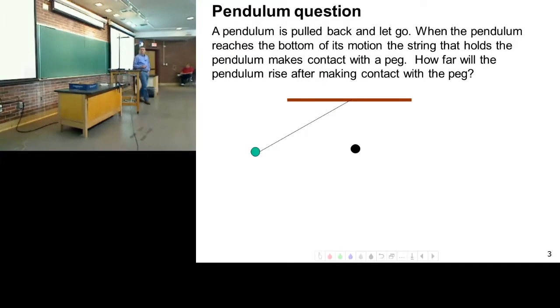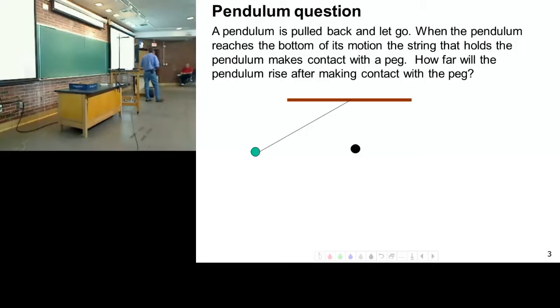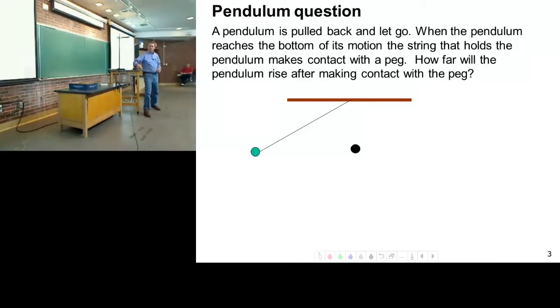Let's think about a pendulum. A pendulum is pulled back and let go. We're going to start this demo here. So a pendulum is pulled back and let go. When the pendulum reaches the bottom, it hits a peg.